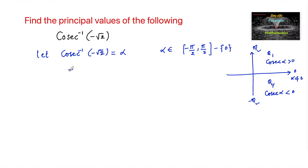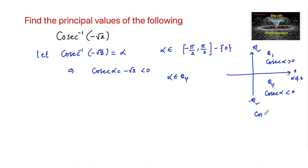This implies cosecant alpha is equal to negative root 2, which is less than 0. So we shall consider that alpha must belong to the fourth quadrant. We know that cosecant of minus theta is equal to minus cosecant theta.